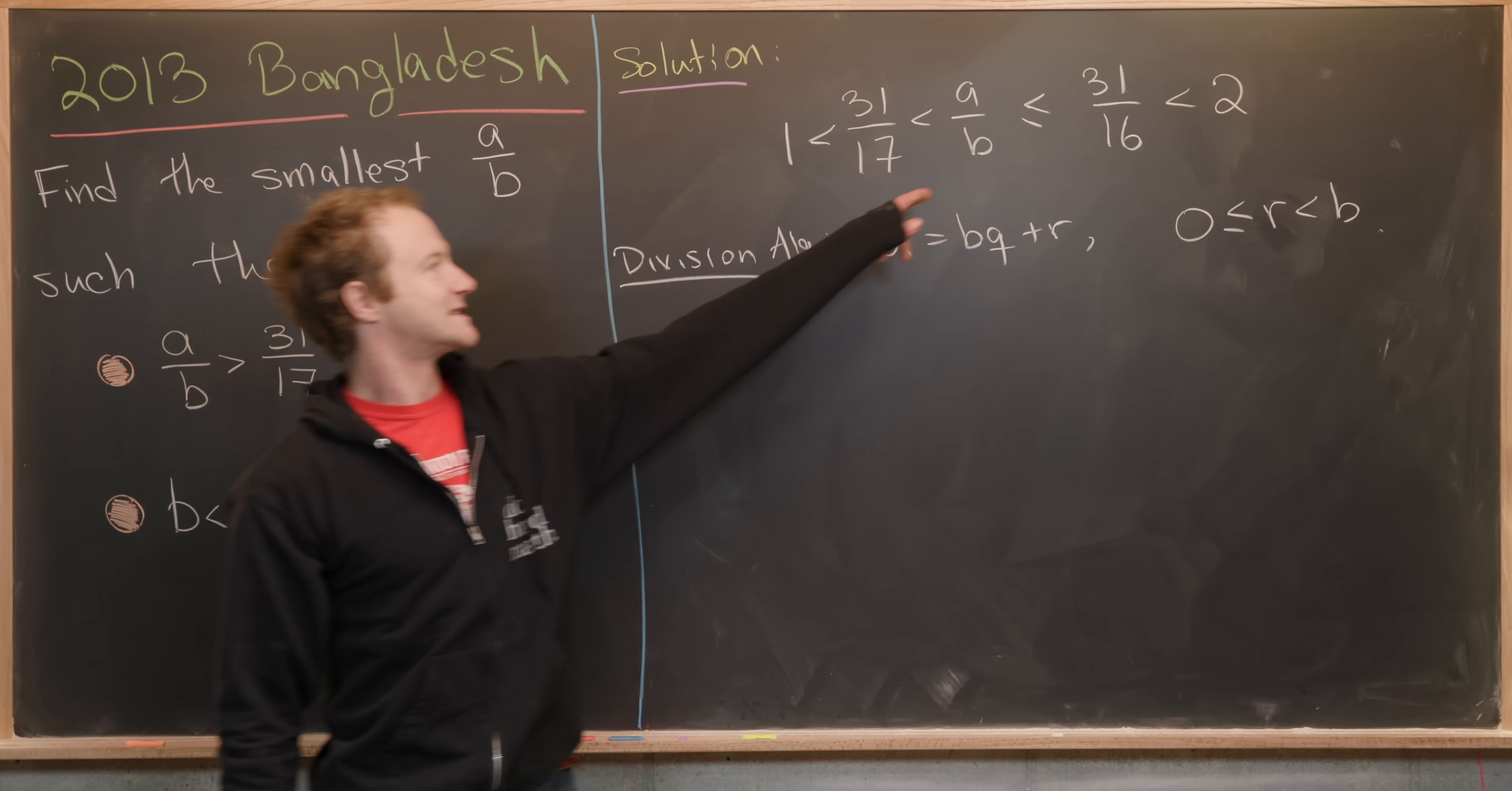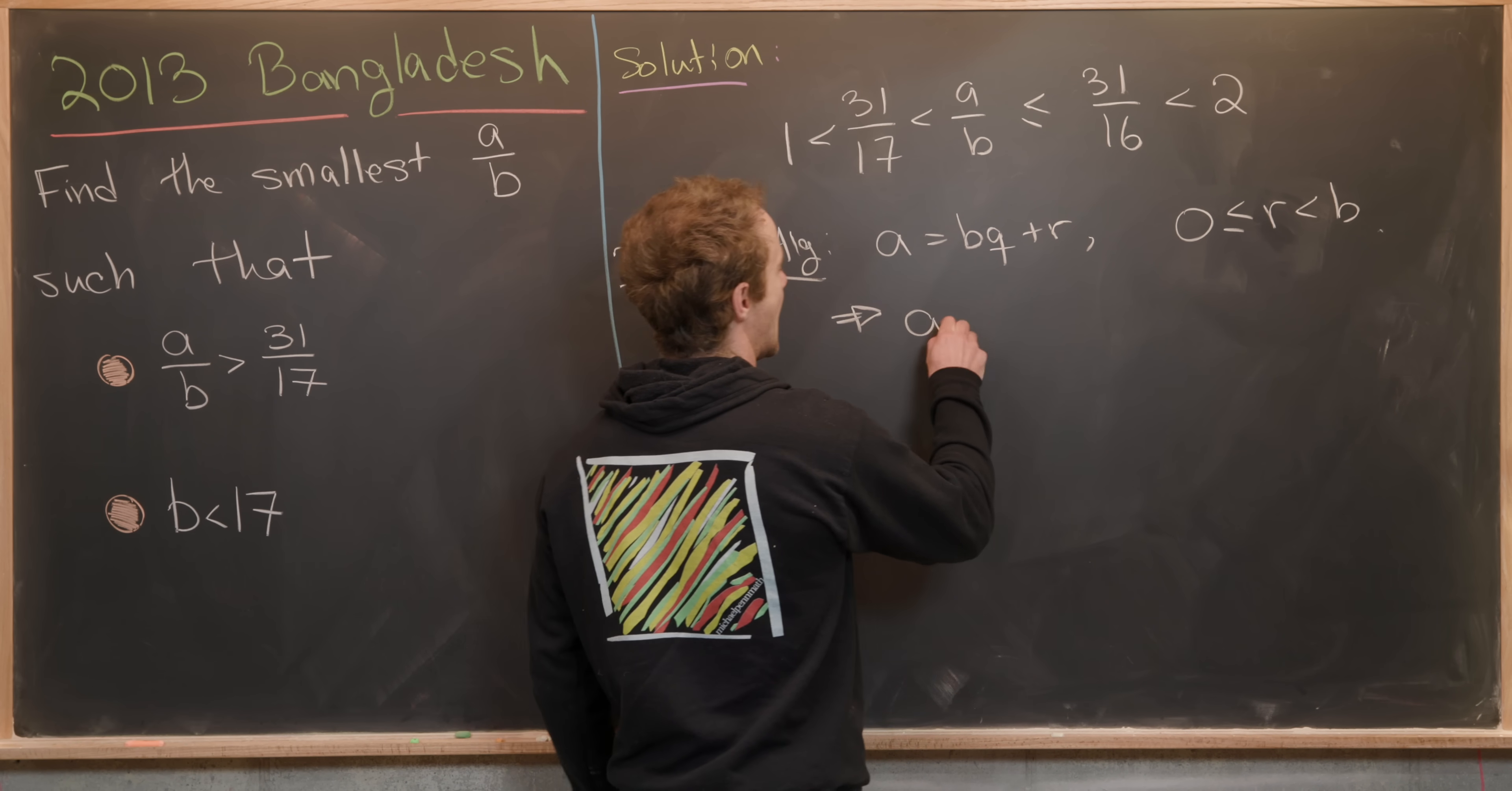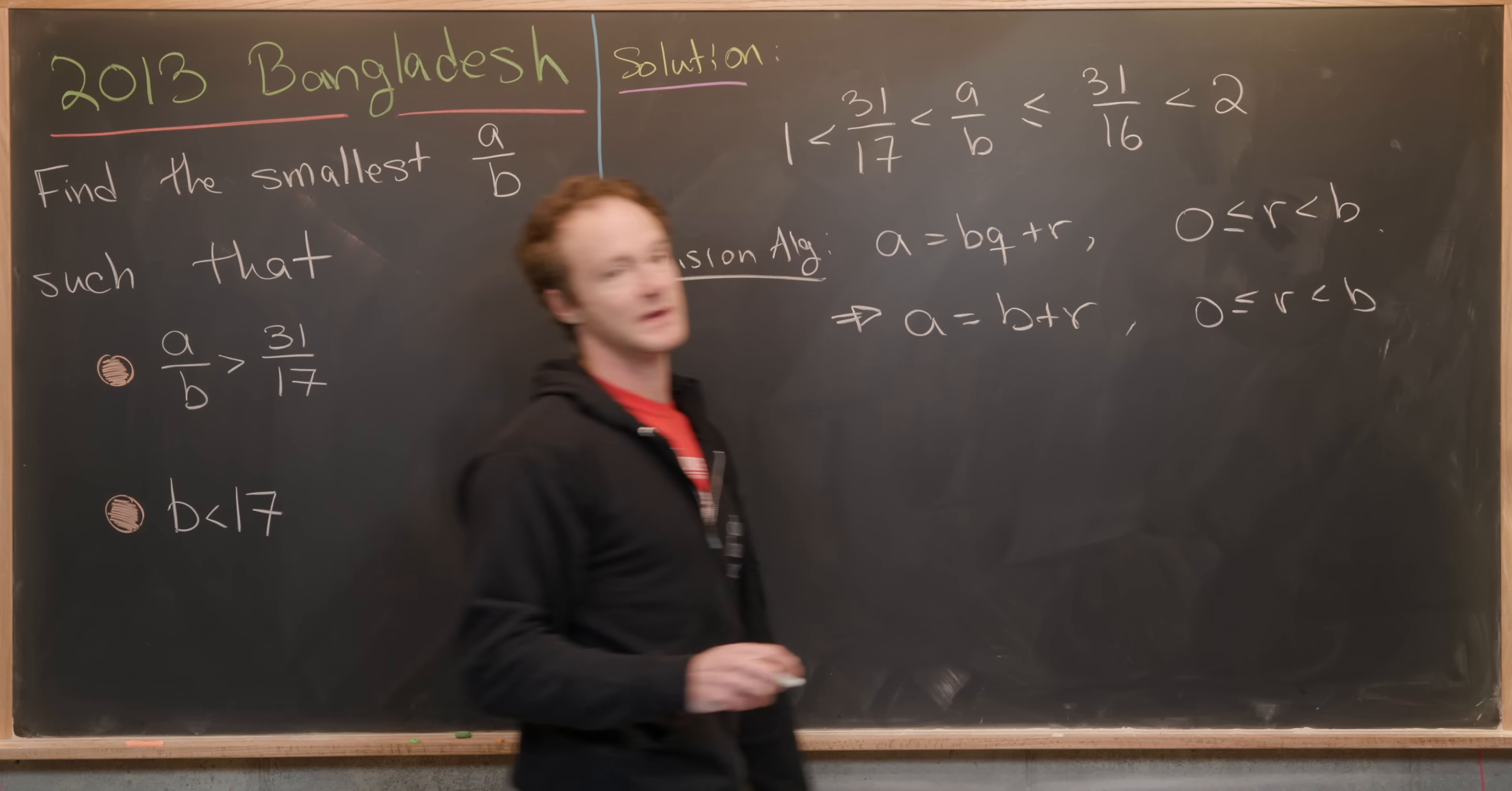Furthermore, by the size of A over B being between 1 and 2, we know that this quotient has to be equal to 1. So we can write A as B plus R, where R is between 0 and B.